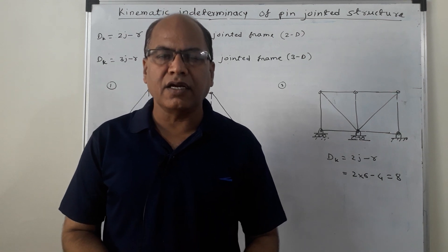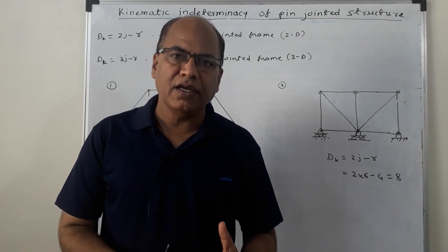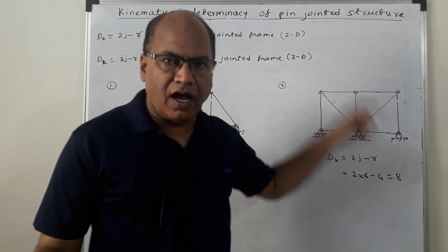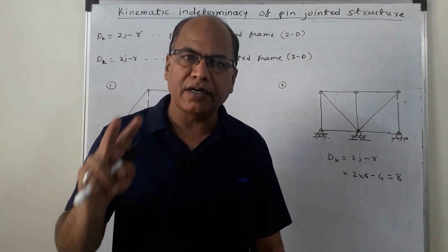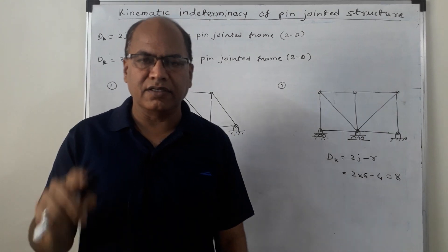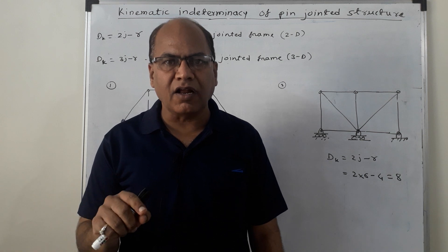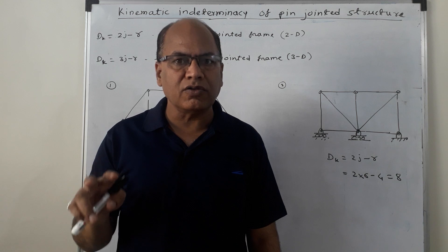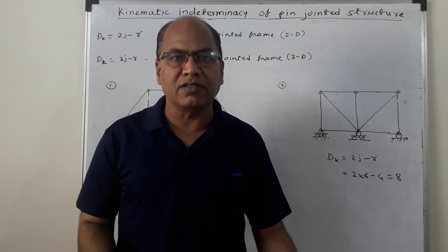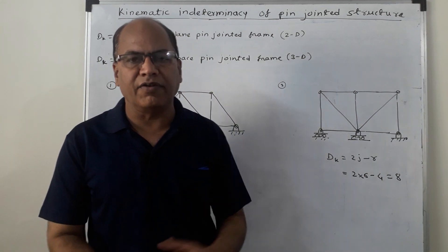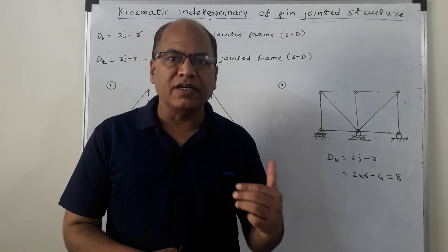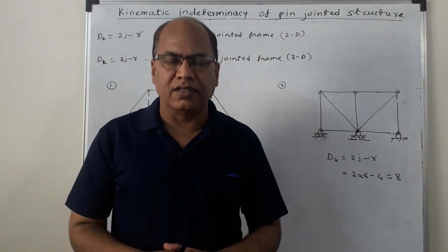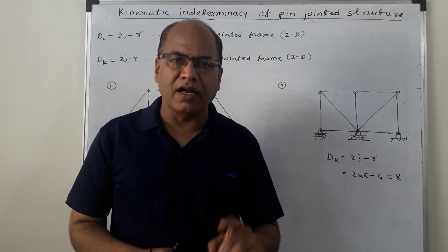No joint is subjected to rotation. Every joint in a two-dimensional pin-jointed frame has two independent displacement components — delta x and delta y — that is, displacement along the x direction and displacement along the y direction. In case of a 3D frame, there are three independent displacement components: delta x, delta y, and delta z.